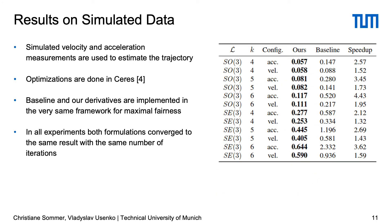To evaluate the proposed approach we first run a series of simulated experiments. We generate a set of velocity and accelerometer measurements from the spline and set up an optimization problem that aims to recover the original trajectory. All optimizations were done in Ceres and run on the same hardware, and we verified that different formulations converge to identical results. The last column of the table shows speedup factors for different configurations. Our formulation is faster than the baseline in all cases and the speedup grows with spline order. Speedup factors with acceleration measurements are larger because the baseline requires a cubic number of matrix operations for accelerations and quadratic for velocities, while our formulation needs only a linear number of matrix operations for both.